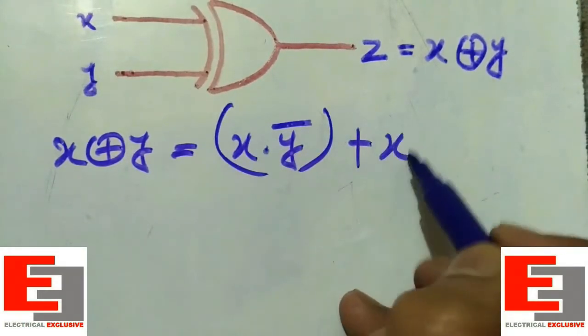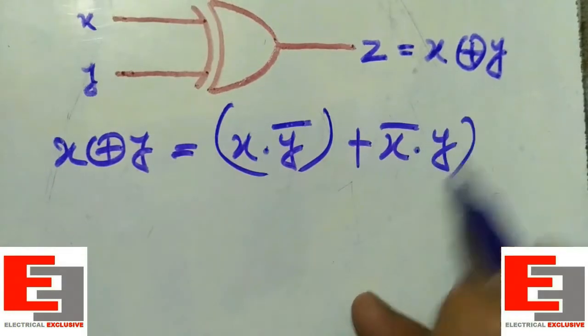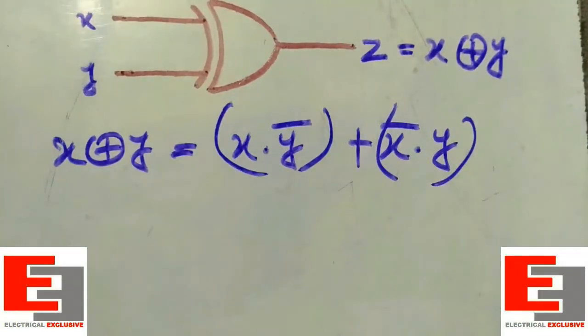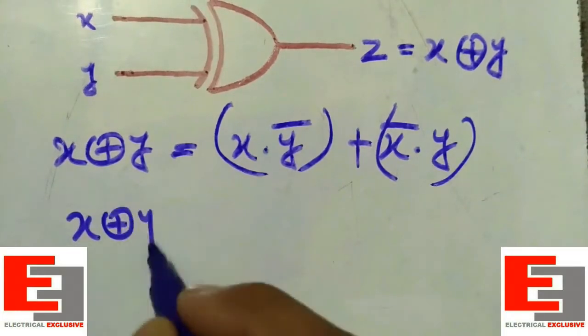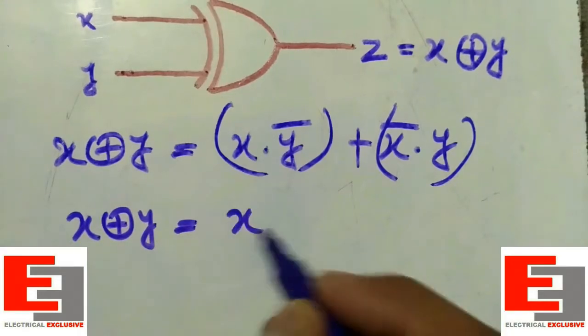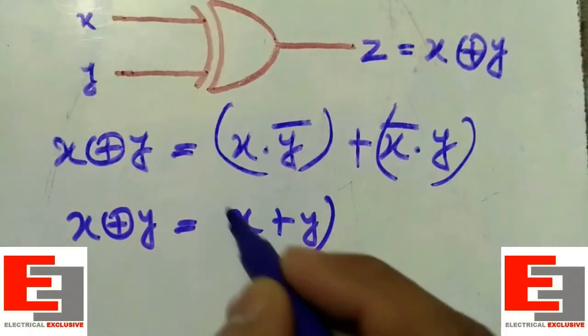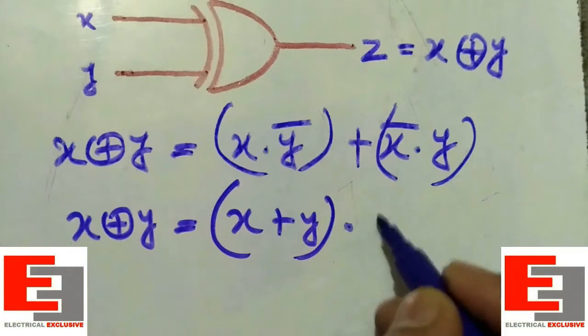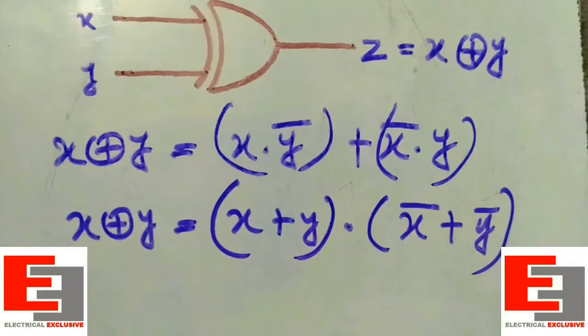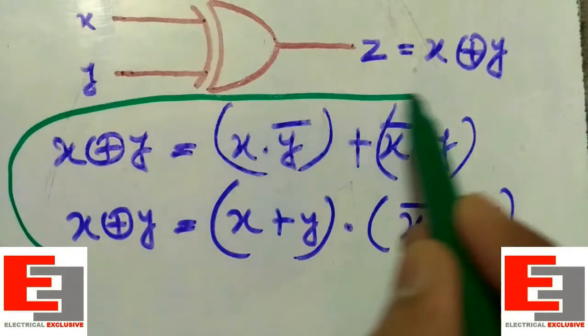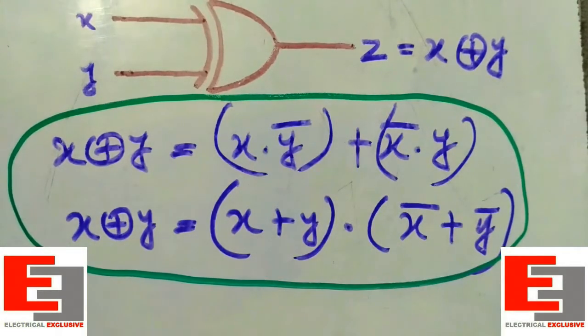There is also another mathematical expression for the XOR function, that is X XOR Y is equal to (X plus Y) into (X bar plus Y bar). These are the mathematical representations of the XOR function.